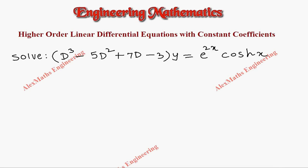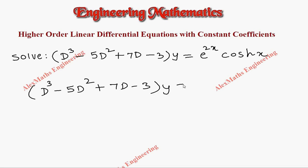Hi students, this is Alex. In this video we're going to discuss a problem: solve (D³ - 5D² + 7D - 3)y = e^(2x)·cosh(x). We rewrite the right-hand side, where cosh(x) equals (e^x + e^(-x)) / 2.